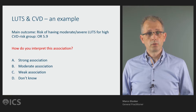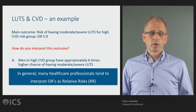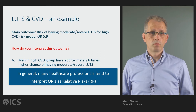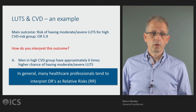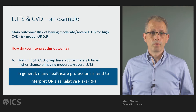In general, many healthcare professionals tend to interpret odds ratios as relative risks, and I believe most people have chosen answer A — that an odds ratio of 5.9 reflects a 6 times higher chance of having moderate to severe lower urinary tract symptoms. But in fact, the only correct answer is that it's undecided because you have missing information.